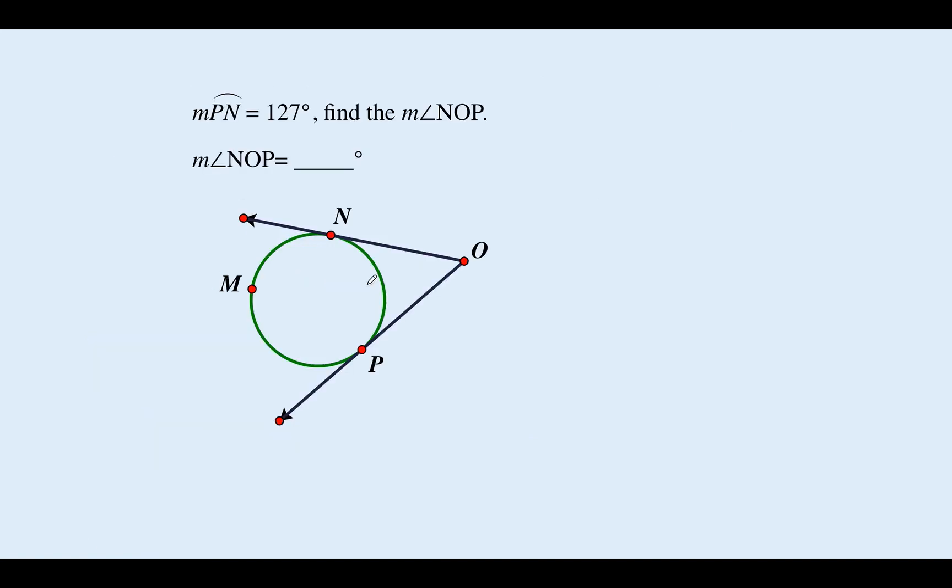One more problem. Hit pause, see if you can solve the problem, come back and check your answer. Angle NOP. This outside angle is equal to one half of the big arc, which is NMP. We have to use three letters because this is a major arc, more than half a circle, minus the small arc which is NP. NP or PN, they're both the same, is 127. So if they give you 127 to find this other side, you just do 360 minus 127 and we get 233.